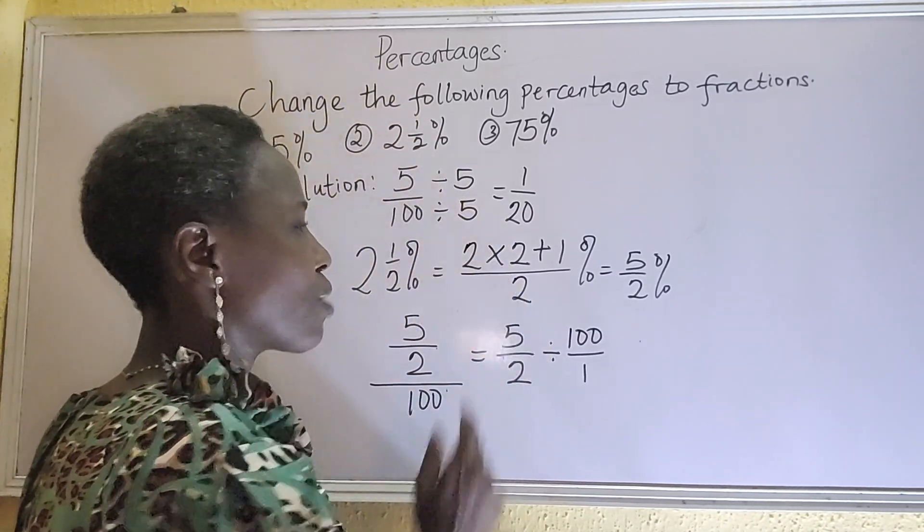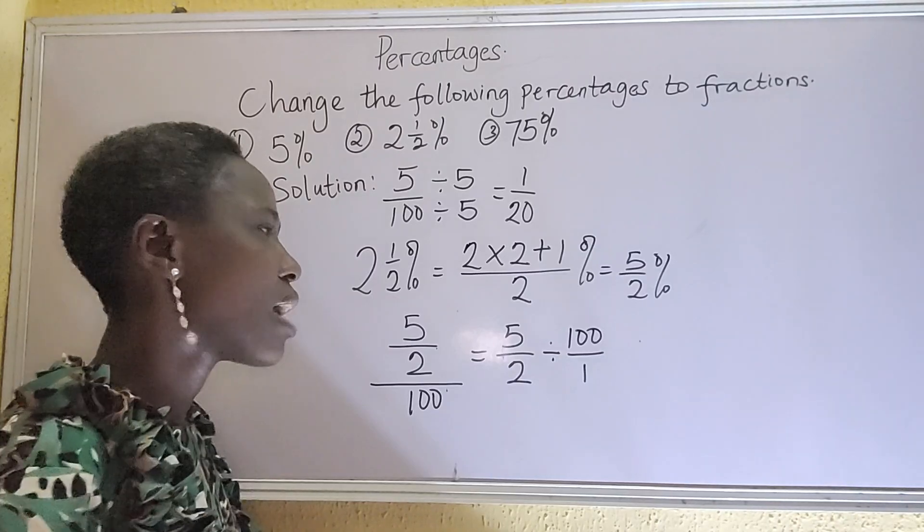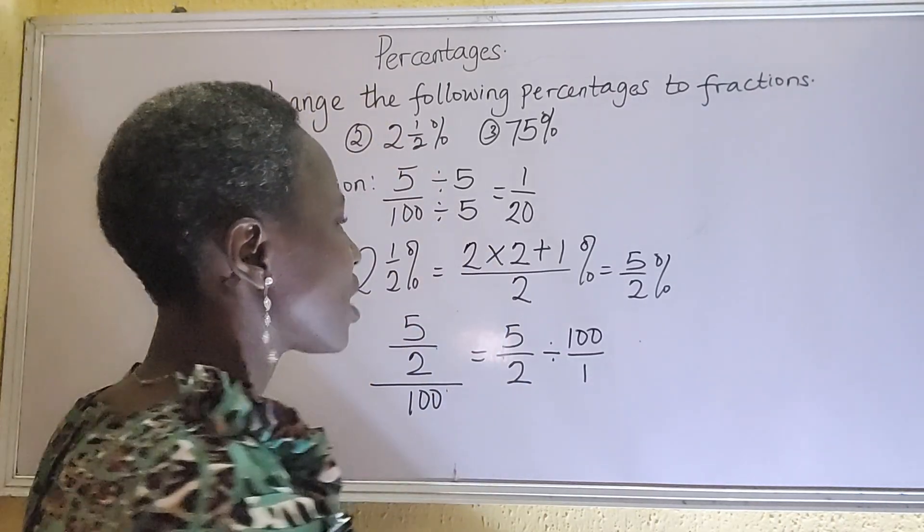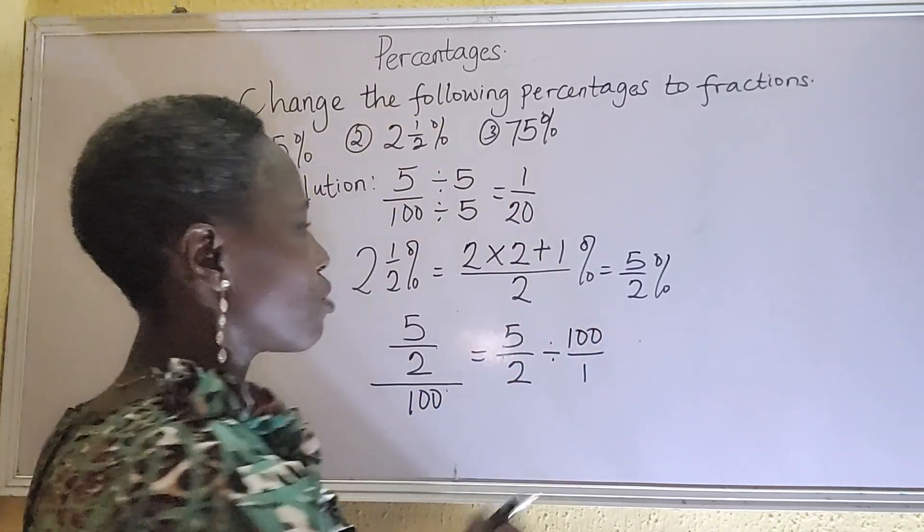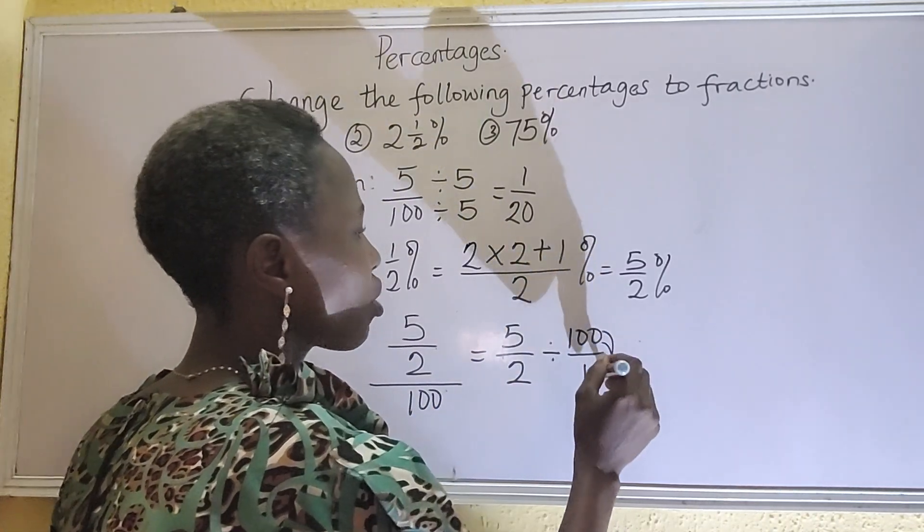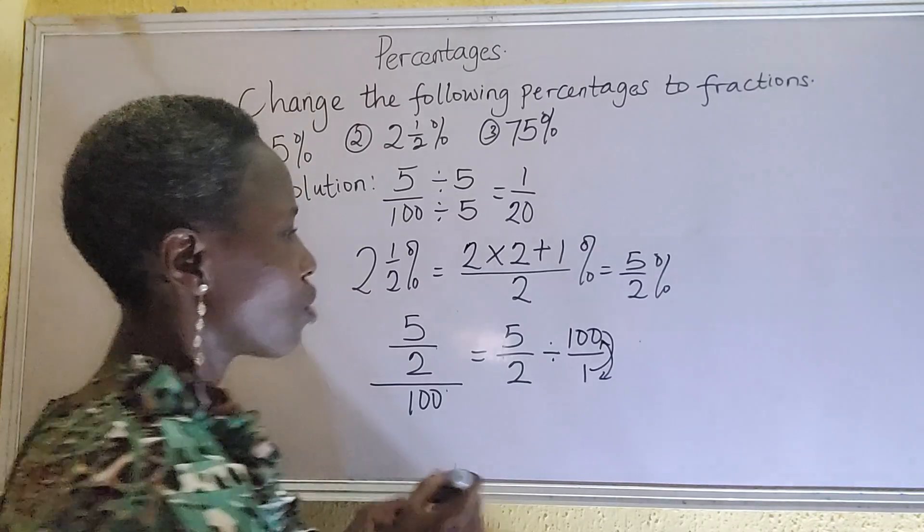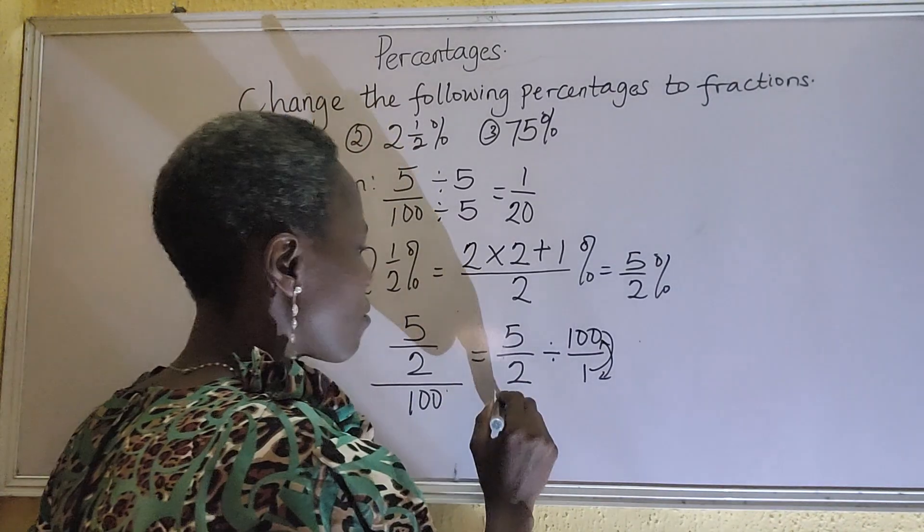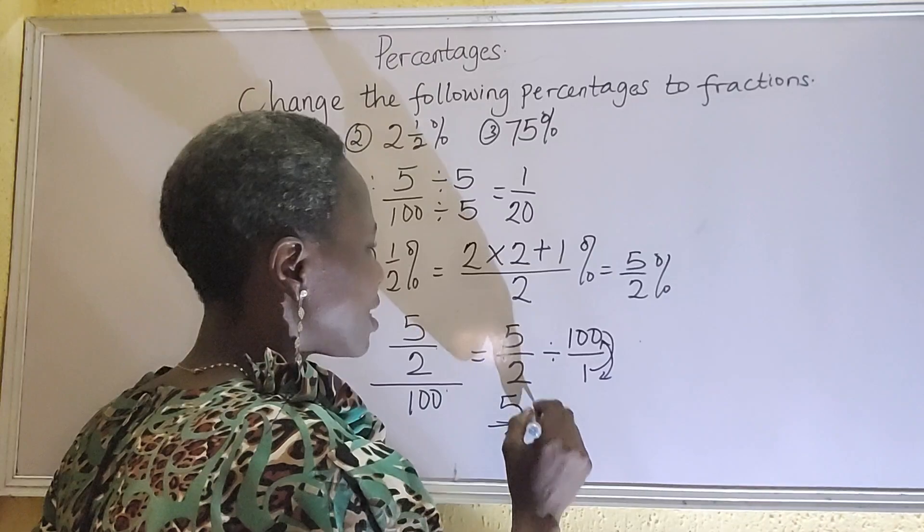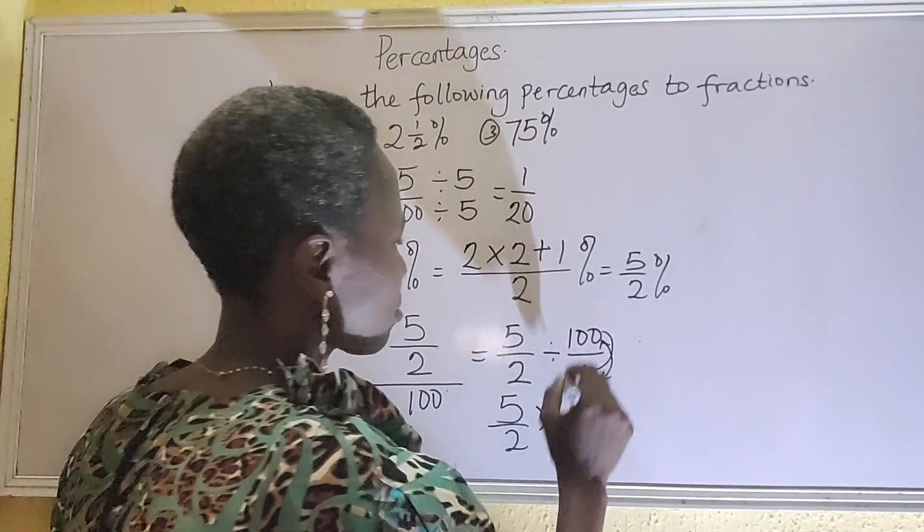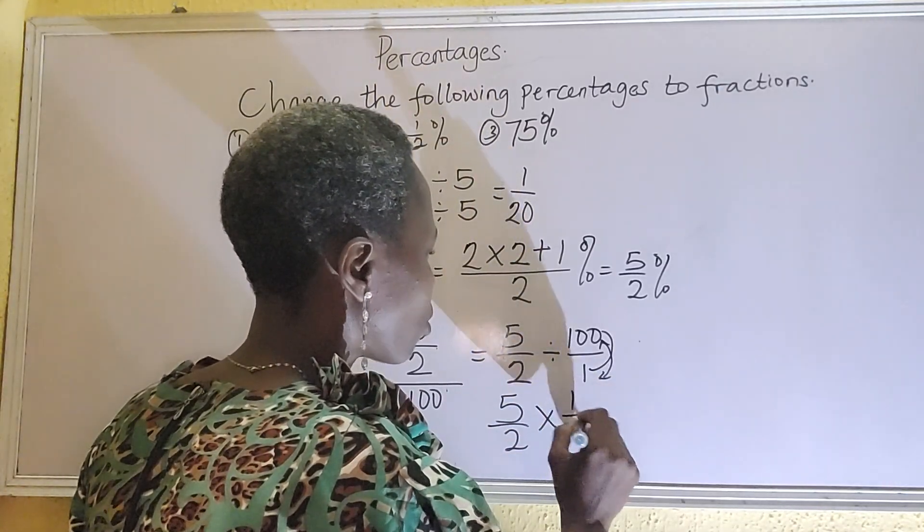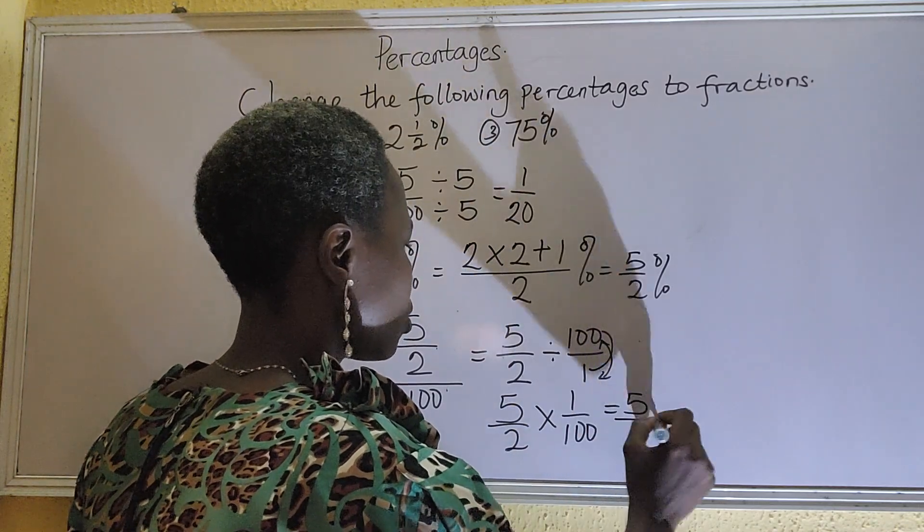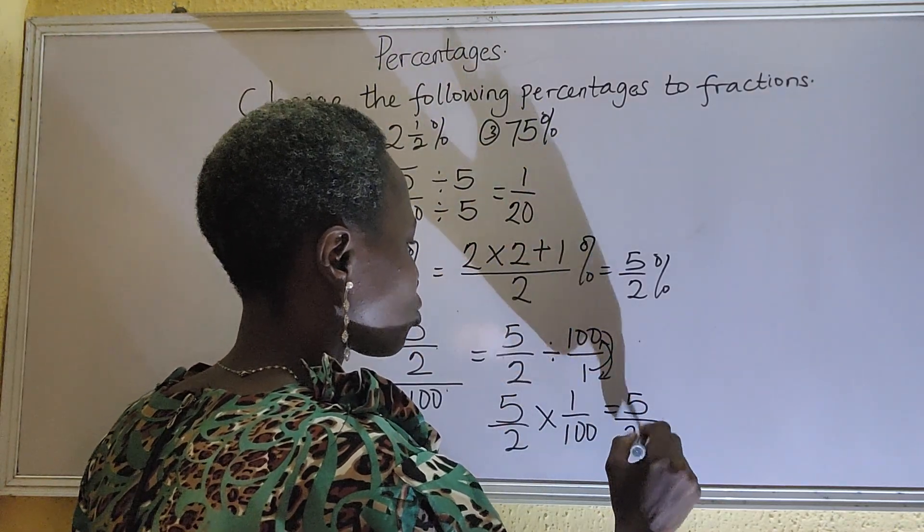In mathematics, division sign when we are multiplying fraction we change to multiplication. And in changing to multiplication, we call it reciprocal, go up the other one we come down. So we have 5 over 2 times 1 over 100, so we have 5 times 1 is 5, 2 times 100 is 200.